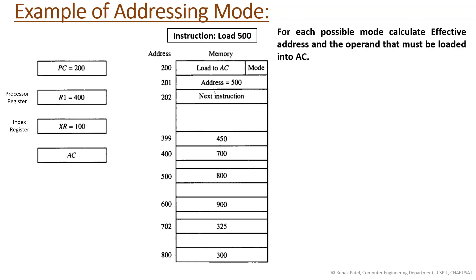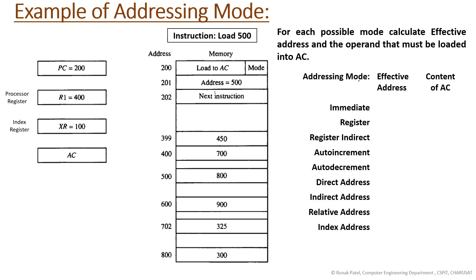For each possible addressing mode, let's calculate the effective address and the operand that must be loaded into the accumulator, since 'load 500' will store the operand from the given address into the accumulator. We need to determine which addressing mode applies. The addressing mode column shows the effective address calculation and the content — which operand will be fetched. At address 399 we have value 450, at address 400 we have value 700, and so on.